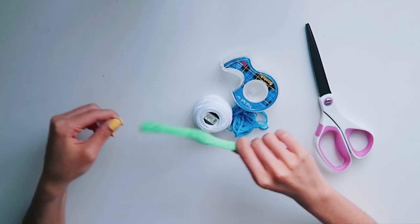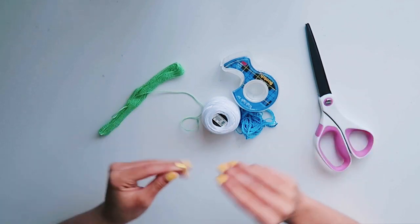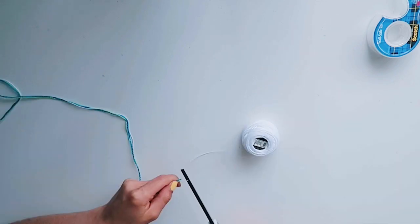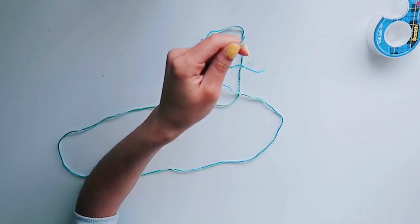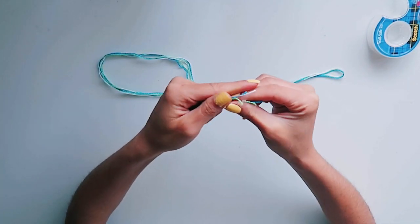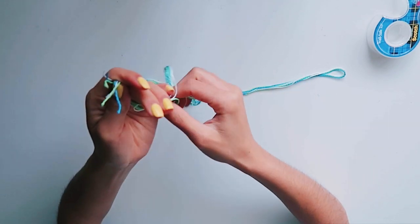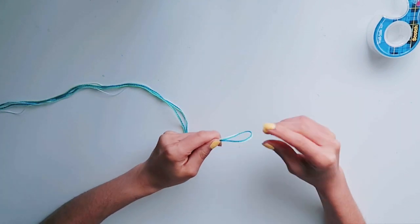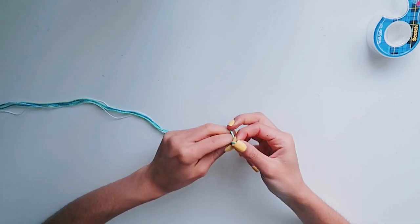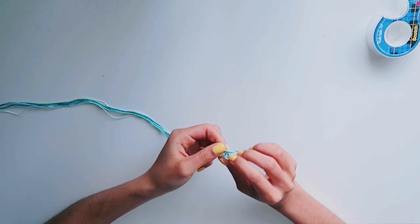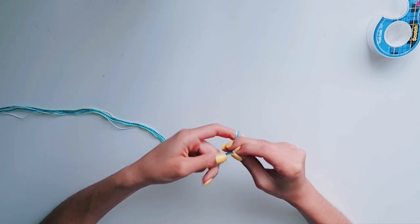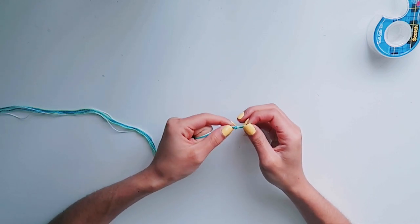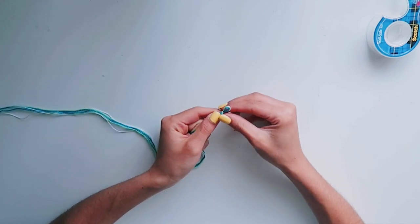First thing, I'm going to measure out the amount of string that I need. So now that I have my string, I just fold it over so that there's basically two of each color like so. And then I'm gonna tie a little knot at the top. There are different ways to end or start your friendship bracelet, but this way I just found was easiest for me. This is how I was taught, so it's basically just how I always do it.